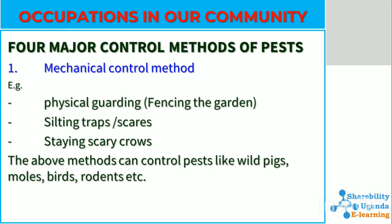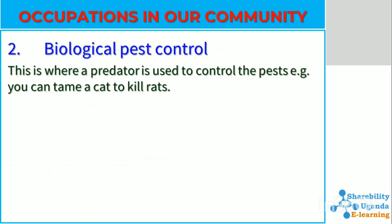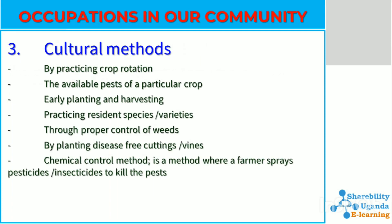We have several methods to control pests in our gardens. Mechanical methods include physical gardening, setting up traps, and placing scarecrows in our gardens — these control pests like pigs, wild animals, and monkeys. We also have biological pest control, where a predator is used to control pests; for example, a cat can be trained to kill rats. Then we have cultural methods, which include crop rotation, among others.